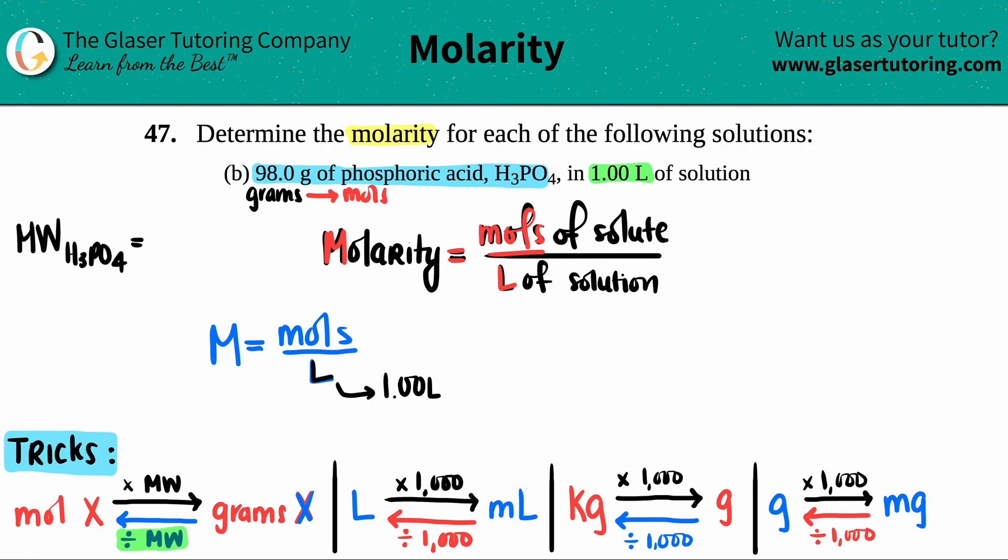For H3PO4, there's three hydrogens, so 3 × 1.008, and you can simplify—you could say like 3 × 1, that's fine. We have one phosphorus and four oxygens. We basically get roughly about 97.994, or 98, and that's grams per mole.